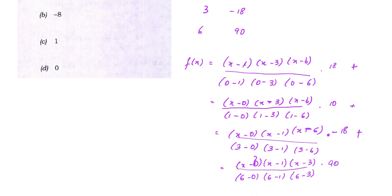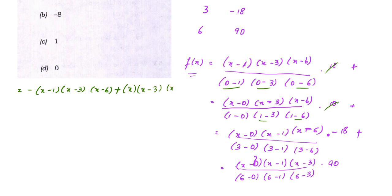Now let us simplify each term. In the first term, the denominator is (−1)(−3)(−6) = −18, which cancels with 18, leaving −(x−1)(x−3)(x−6). In the second term, (1)(−2)(−5) = 10, which cancels with 10, leaving x(x−3)(x−6). In the third term, (3)(2)(−3) = −18, which cancels with −18, leaving x(x−1)(x−6).